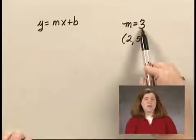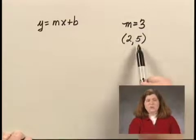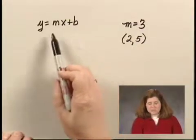Well, we're given m, but we're not given b. We can find b, however, because we're given a point on the line. This must be true for every point on the line. In particular, it has to be true when x is 2 and y is 5.